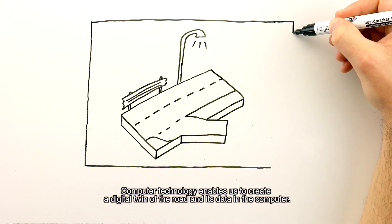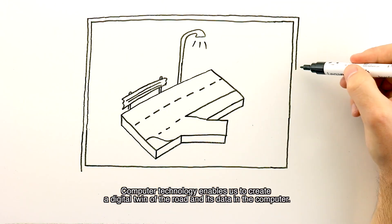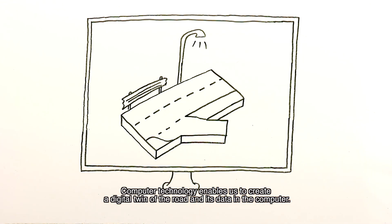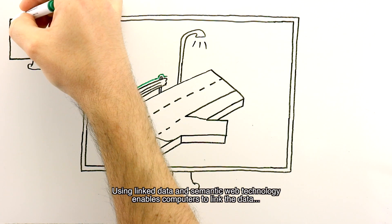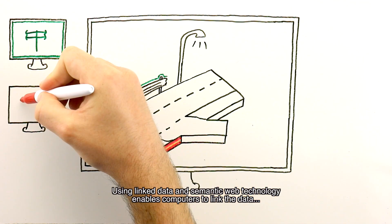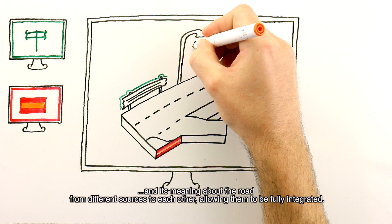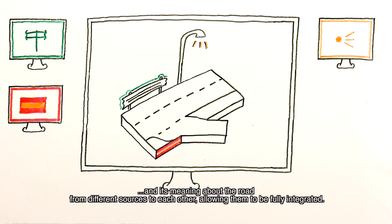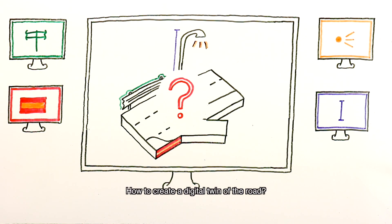Computer technology enables us to create a digital twin of the road and its data in the computer. Using linked data and semantic web technology enables computers to link the data and its meaning about the road from different sources to each other, allowing them to be fully integrated.